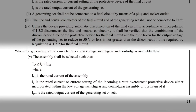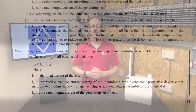The regulation reads: where the generating set is connected via a low voltage switchgear and control gear assembly — which is what we do in pretty much every case of PV installation — then the assembly shall be selected such that INA ≥ IN + IGS, where INA is the rated current of the assembly. So let's break that down a little bit. INA is the rated current of the assembly, or in other words, how much current the consumer unit can have flowing through it.